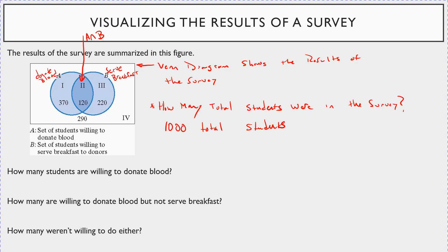Next, how many students are willing to donate blood? That's all students in Set A — 370 plus the 120 in the intersection, since those 120 are also donating blood. That gives 490 total. And how many are willing to donate blood but not serve breakfast? That's just the 370 in region one, since the overlap includes breakfast service too.